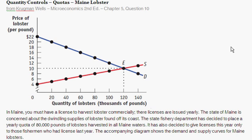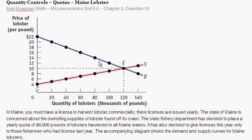The diagram shows the demand and supply for Maine lobsters. On the vertical axis, you've got the price of lobster per pound, going from zero up to $22. On the horizontal axis, you have quantity of lobsters both demanded and sold, in thousands of pounds. At a price of $20, there's 20,000 pounds of lobster demanded. Moving down the demand curve, as the price decreases, the quantity demanded steadily increases.